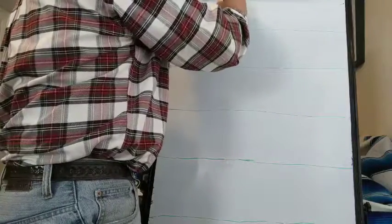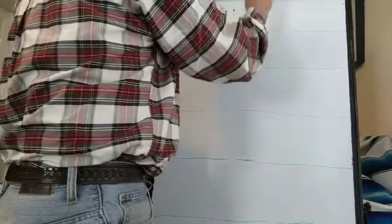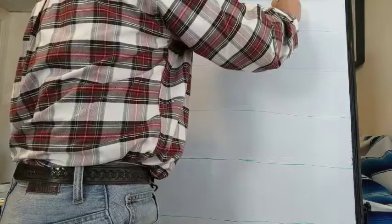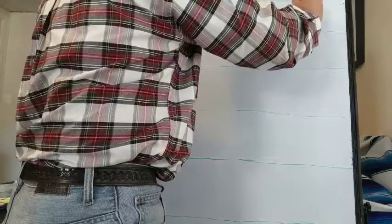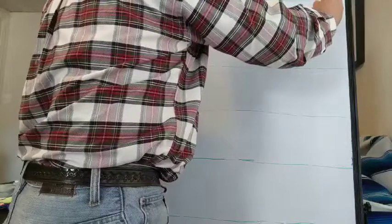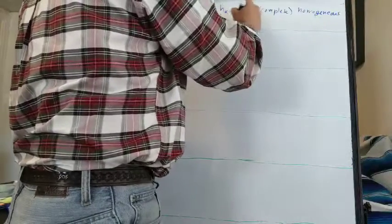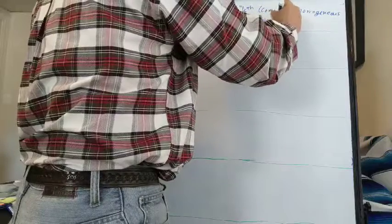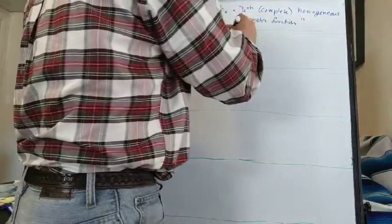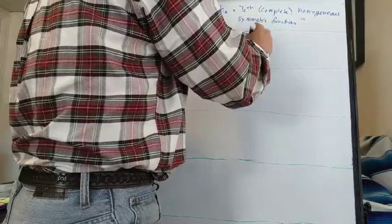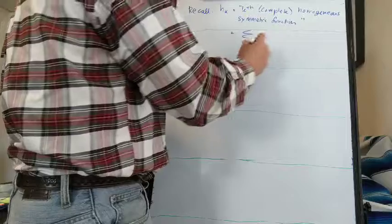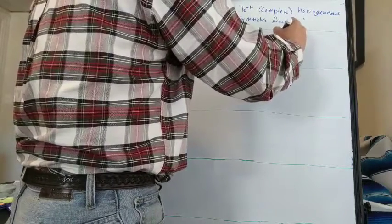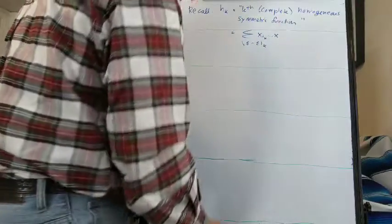Recall that h_k, the k-th complete homogeneous symmetric function, is the sum over indices i_1 through i_k which are weakly increasing, of monomials of the form x_{i_1} through x_{i_k}.